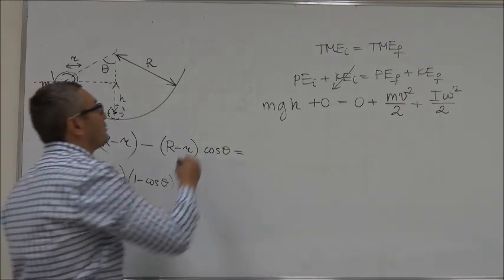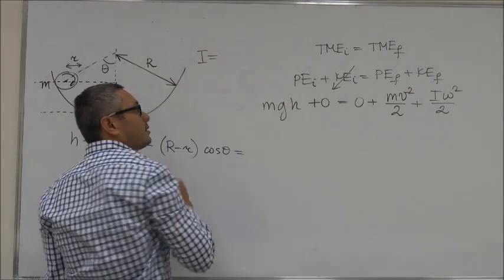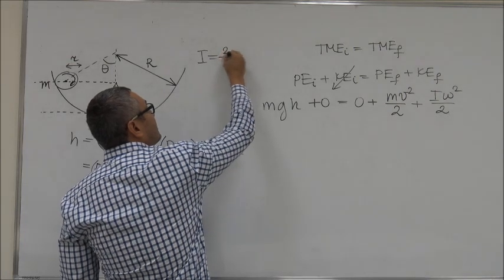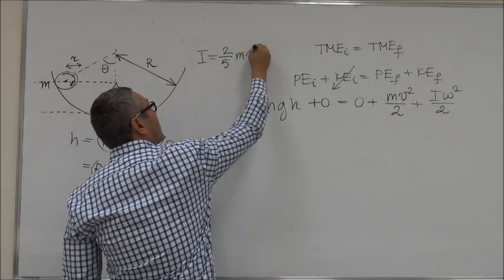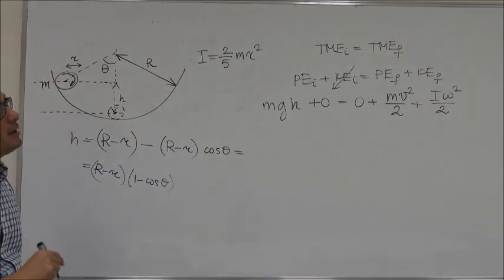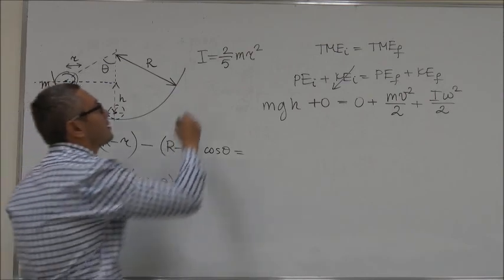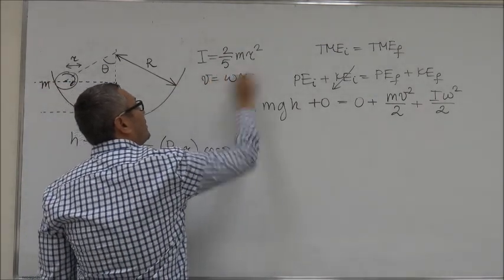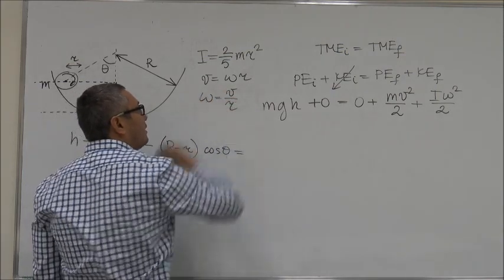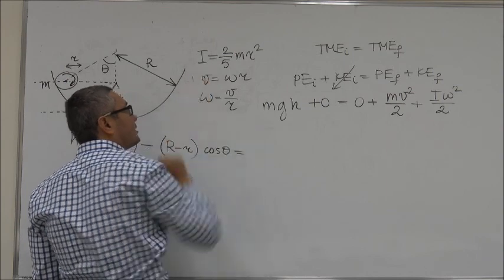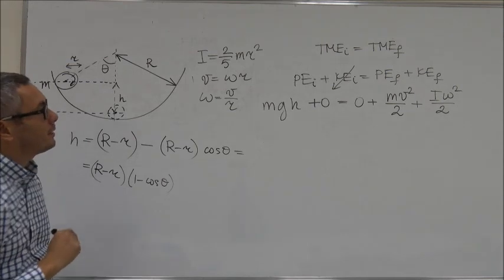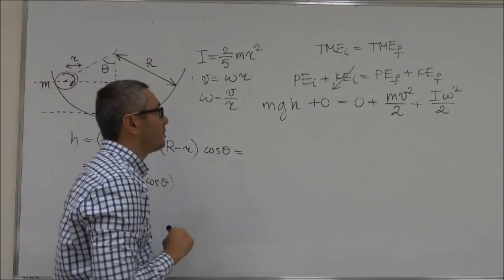In the problem we are also given the moment of inertia of a solid sphere with respect to the diameter and that is 2 over 5 mr squared. We also know the relation between omega and v, which is v equals omega R. We can write this because the ball is rolling without slipping.